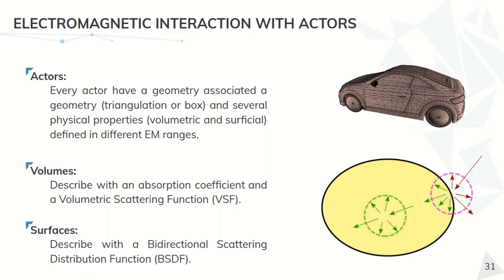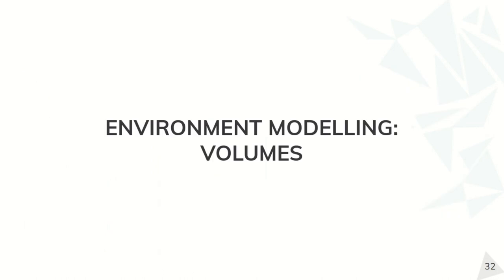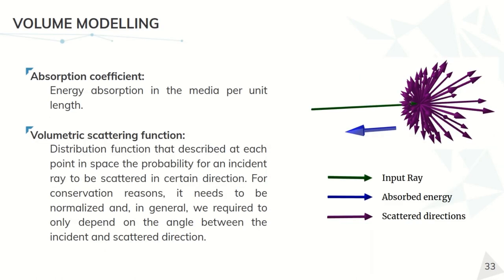So how do we describe our electromagnetic interaction with actors? Of course, every actor has a geometry associated and then some physical properties, volumetric and superficial, defined in different electromagnetic ranges. So let's talk about how we define the electromagnetic interaction first in volumes. For doing this, we have two important aspects to consider. The first one is the absorption coefficient, that is basically the energy absorption in the media per unit length.